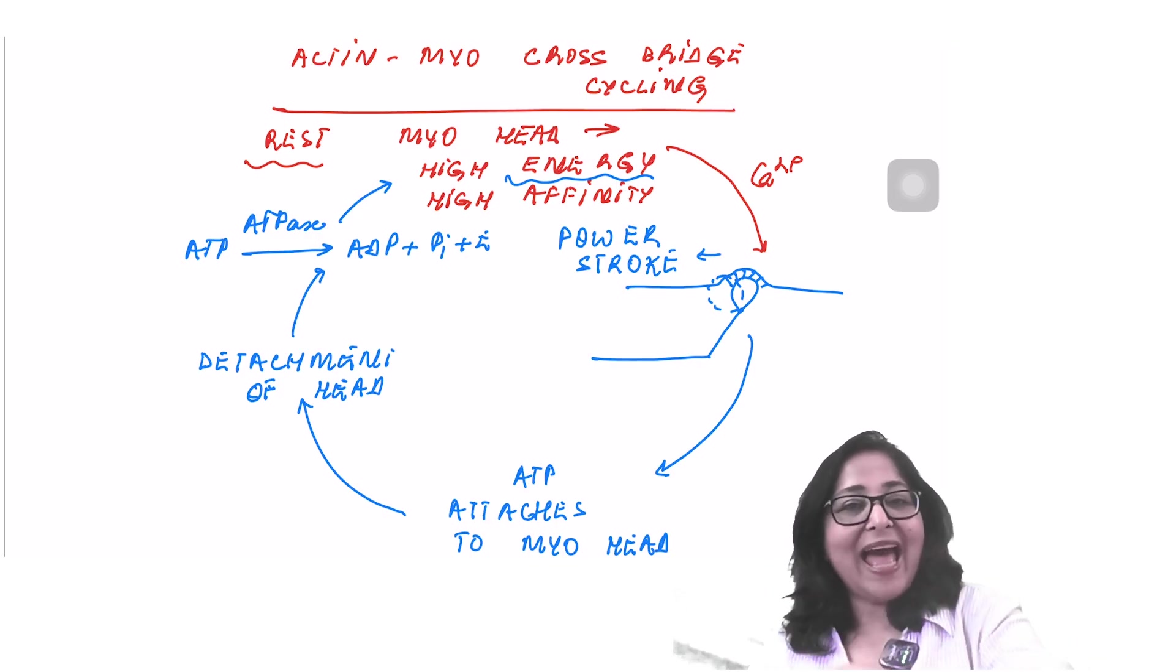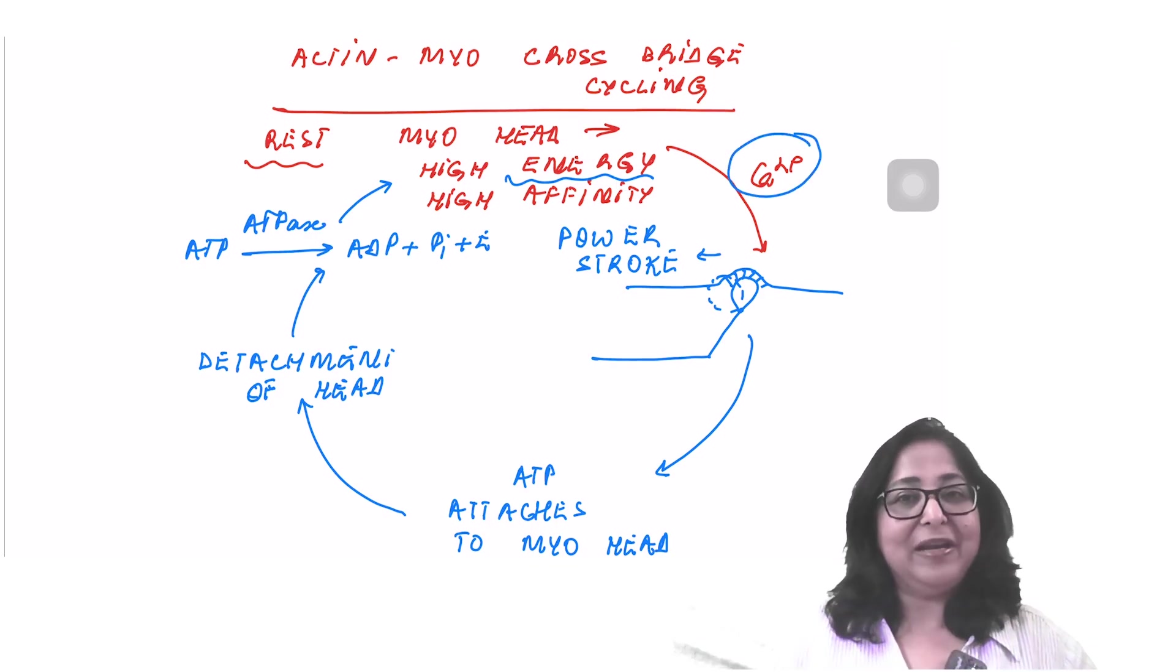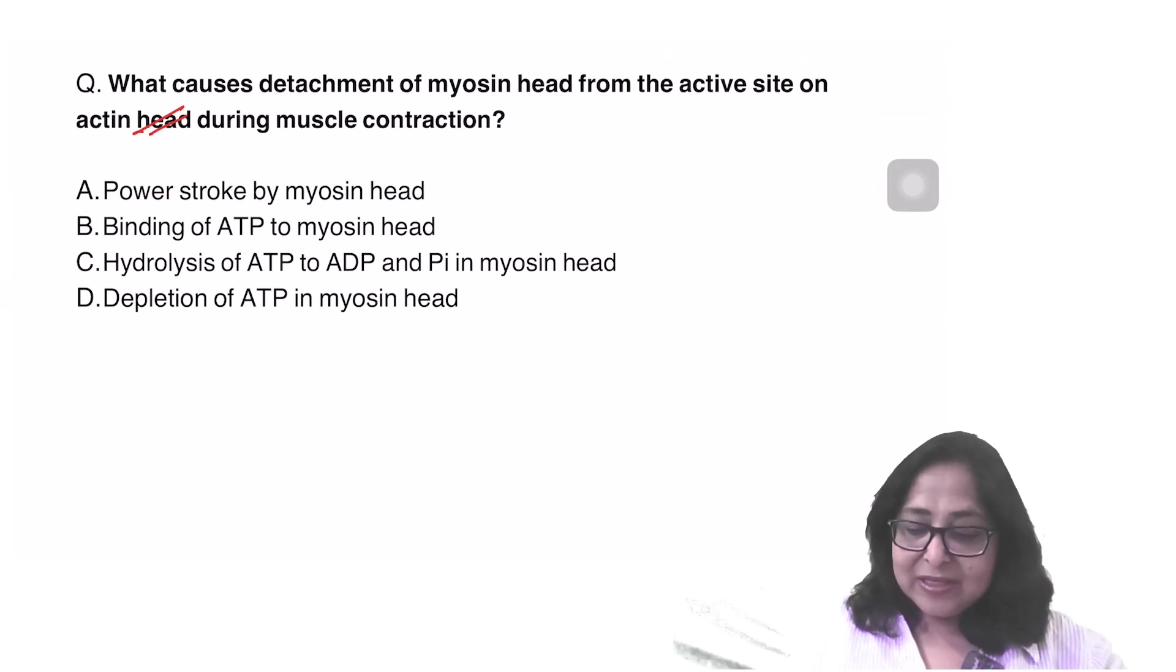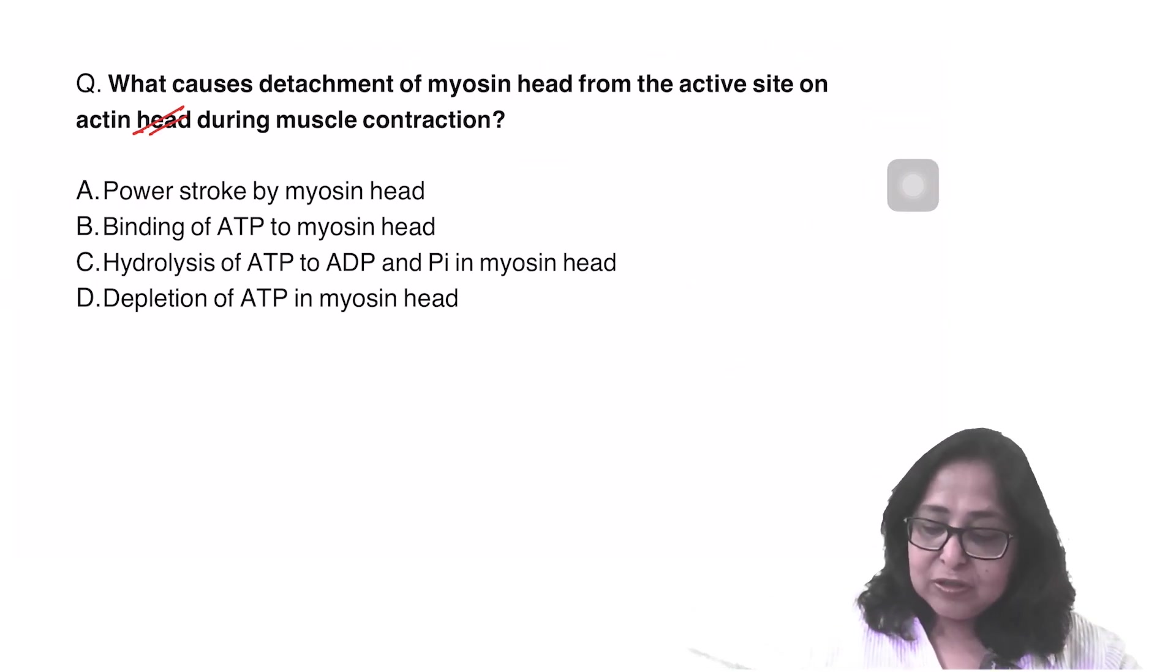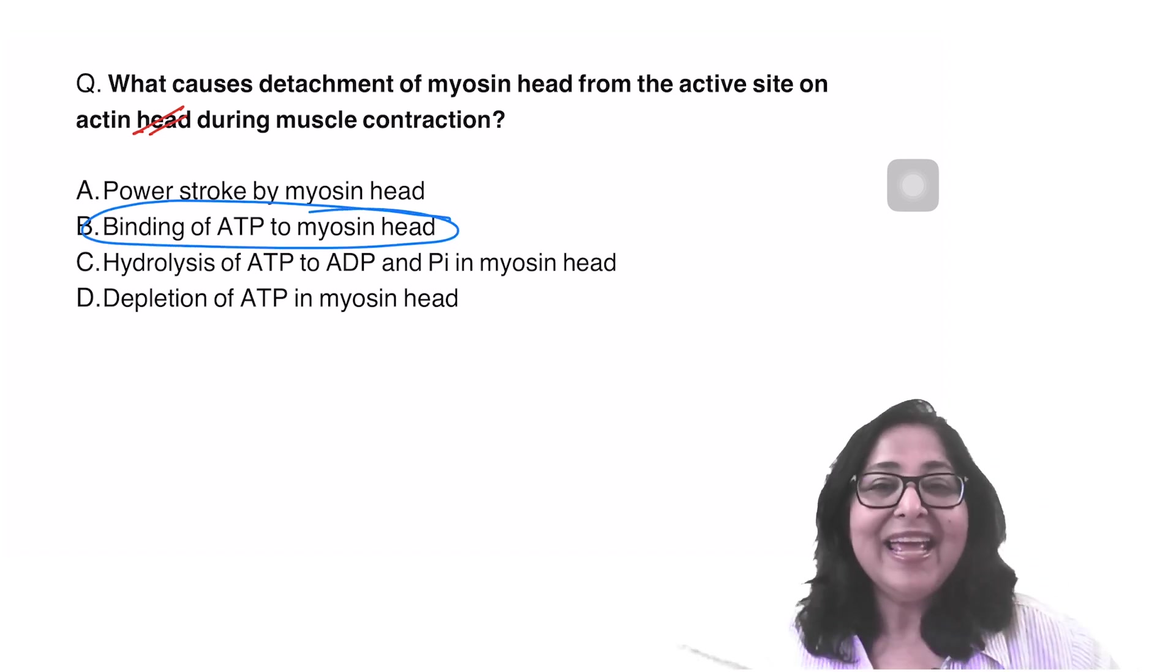Please remember, this actin-myosin cross-bridge cycling will continue till calcium is available. Once calcium goes back into the sarcoplasmic reticulum, the cycle stops at this point. So go back to this question, what is causing a detachment of head? This is binding of ATP to the myosin head.